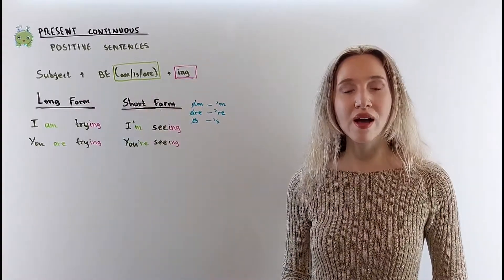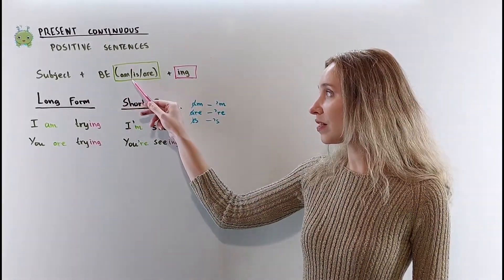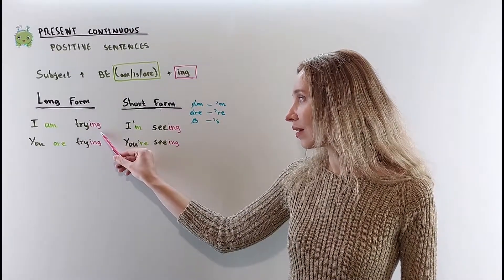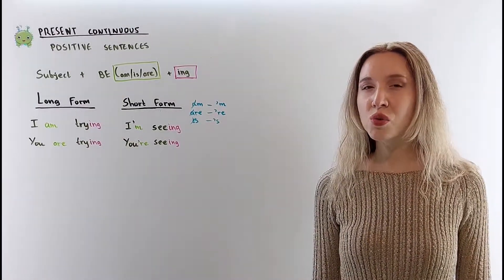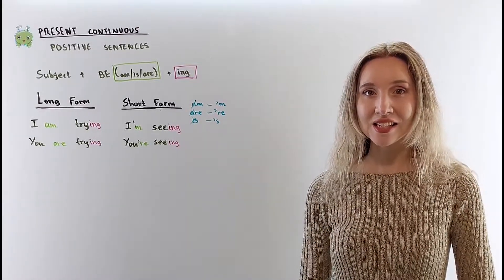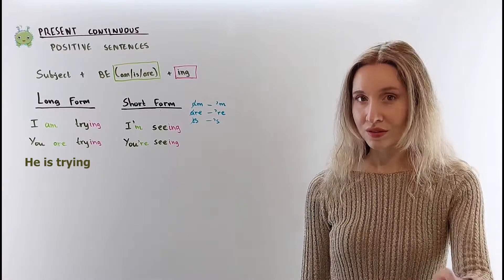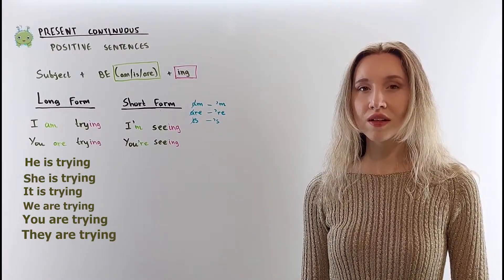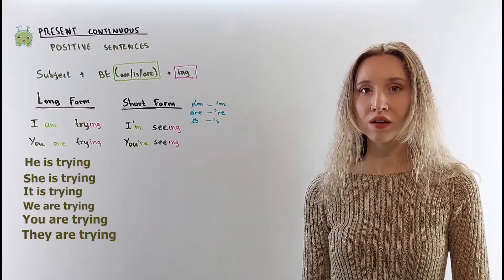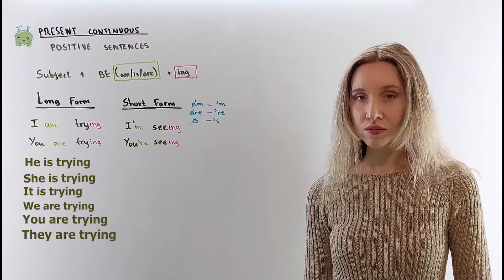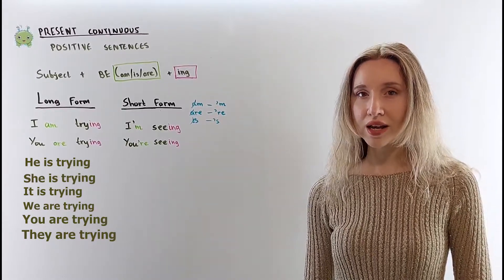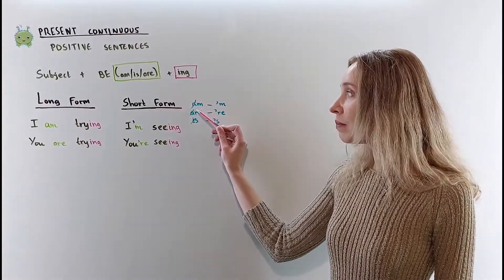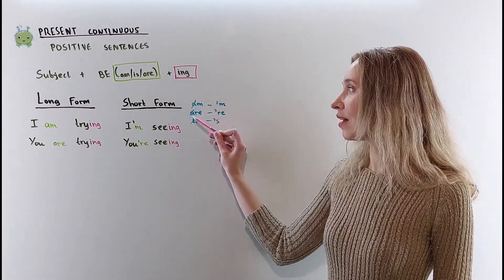To make affirmative sentences in the present continuous, use the subject followed by the auxiliary verb BE in the present simple — am, is, are — and the verb in ING form. I am trying, you are trying, he is trying, she is trying, it is trying, we are trying, you are trying, they are trying.